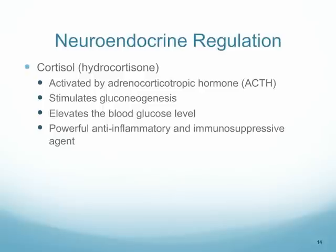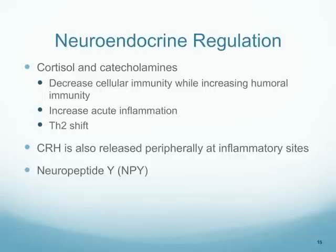Another stress hormone is cortisol, activated by adrenocorticotropic hormone. It stimulates gluconeogenesis — the making of new glucose — helping to elevate blood glucose levels. It is also a very powerful anti-inflammatory and immunosuppressive agent, which is why, when cortisol is elevated during stress, the person will have problems with their immune system. These hormones are released into the bloodstream when a person experiences an accident, illness, or injury that causes acute inflammation.